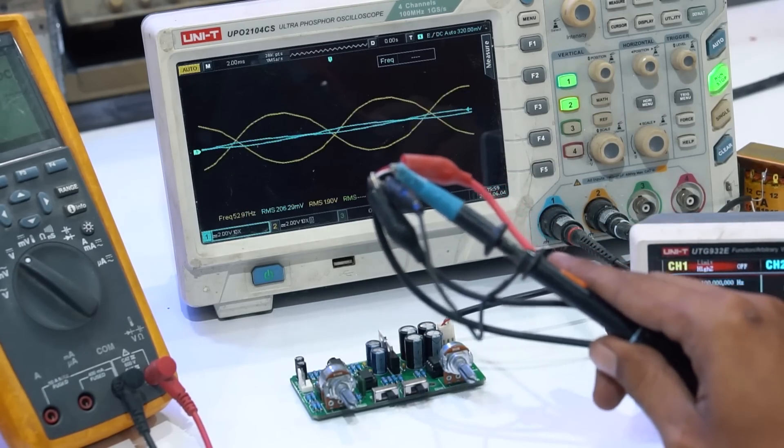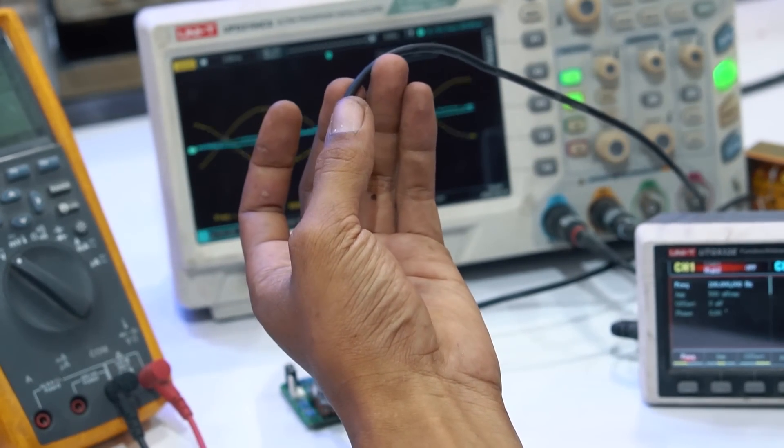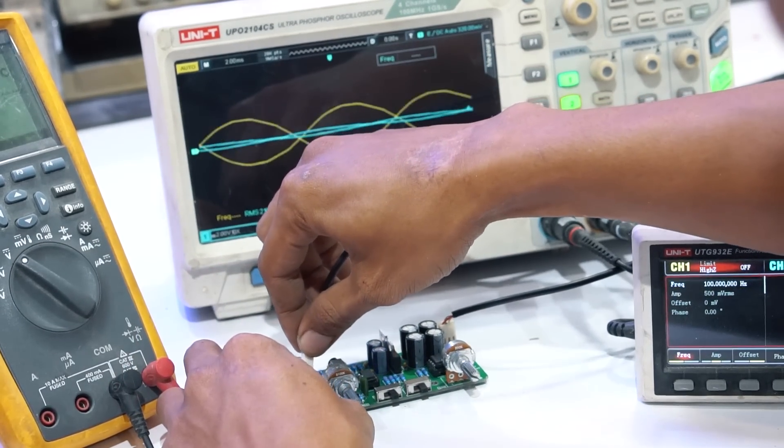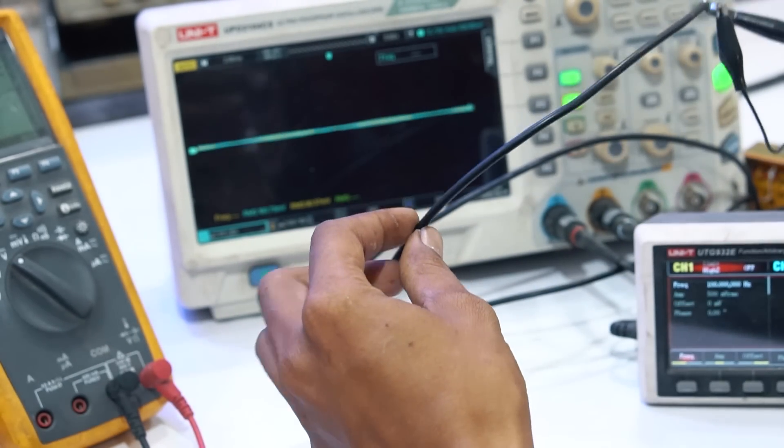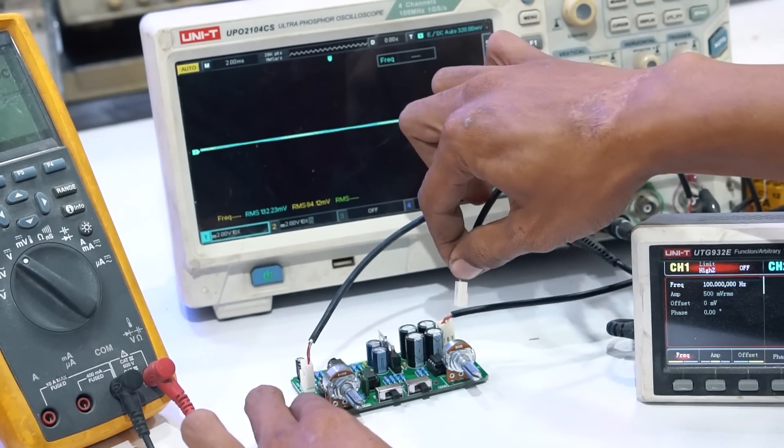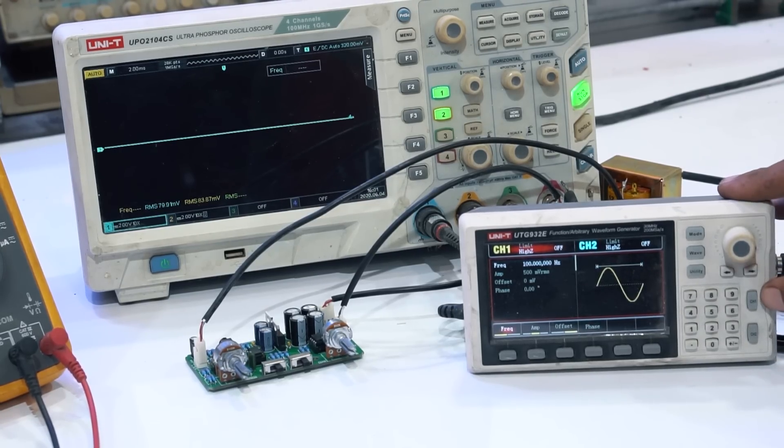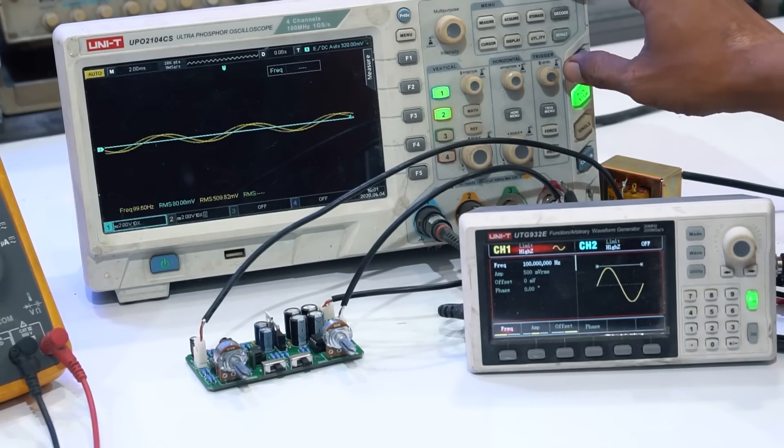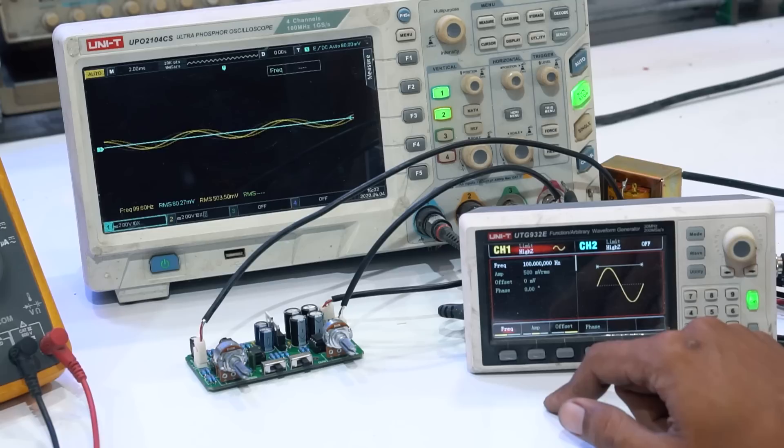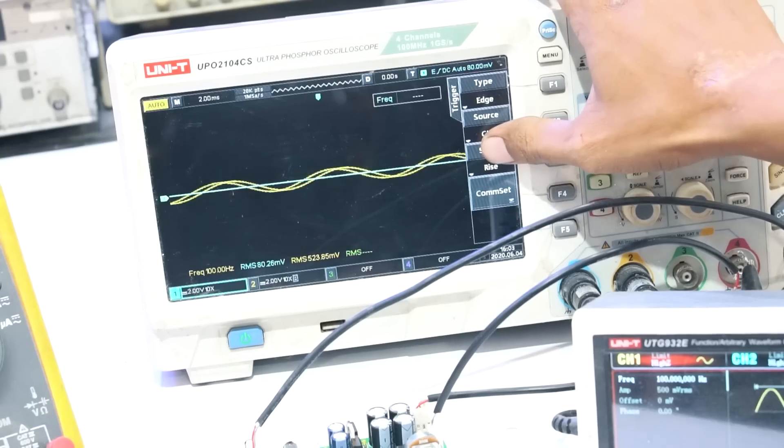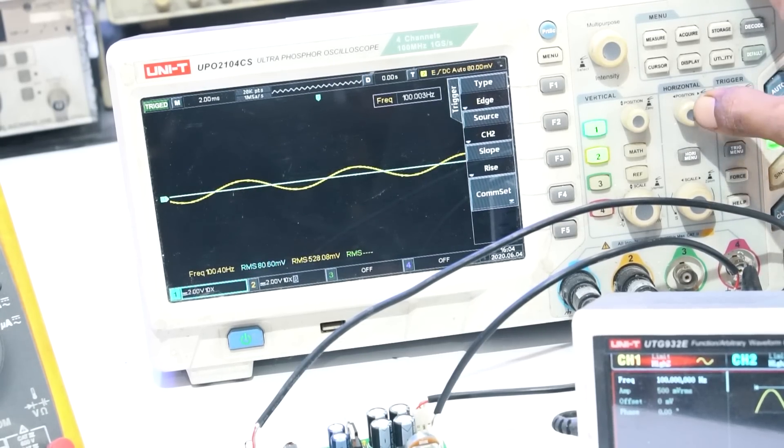Next, I connect the input to the audio generator along with oscilloscope measurement. For the input, I connect it to channel 2 which is yellow, and the output to channel 1 which is light blue. Then we activate the audio generator. The audio generator is set at 100Hz frequency with 500mV RMS amplitude. We can see on the oscilloscope the signal has entered, reading 100Hz frequency with 528mV RMS. There is a slight difference between the audio generator and oscilloscope, but that's okay.